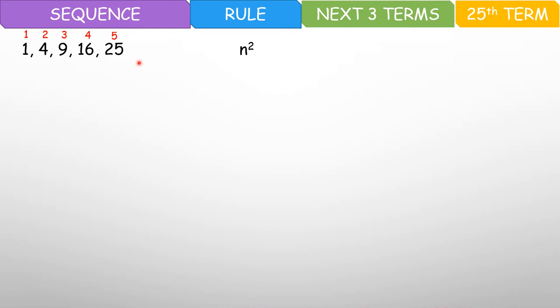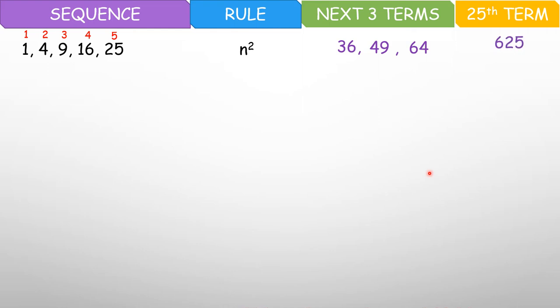Kasi nga itinimes lang sa sarili niya — tinimes ng dalawang beses. Kaya n squared. So kung n squared lang yan, edo yung kasunod ay 6 — eh di 6 times 6, diba? So next term ay 36. Kasunod naman is pampito — 7 times 7 is 49. Sunod ay pang-8 — 8 times 8 is 64. Ganyan lang. So yung 25th term is 25 times 25, and you get 625.